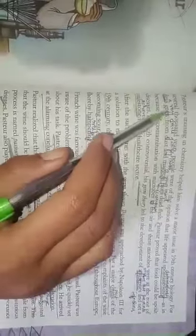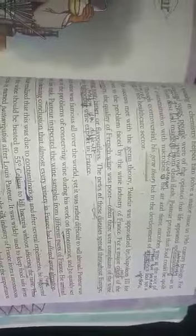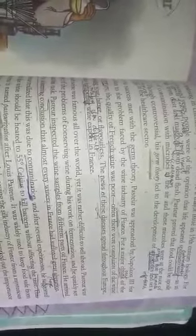Pasteur's training in chemistry helped him solve a major issue in 19th century biology. For several thousand years, people were of the opinion that life appeared spontaneously - spontaneously means automatically. For example, fleas grow from dust (fleas are small insects on the body of dogs) and maggots from dead sheep.